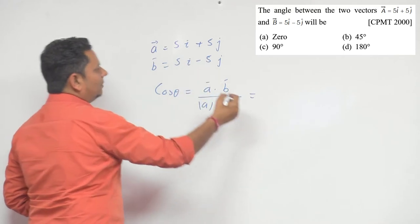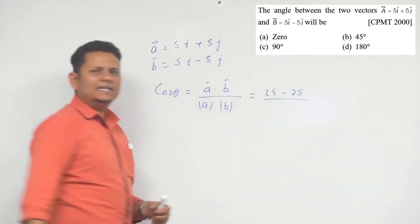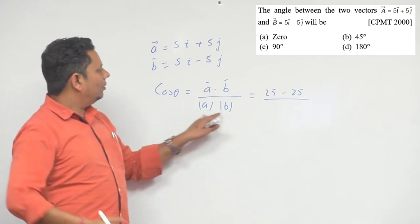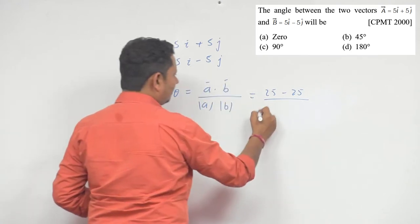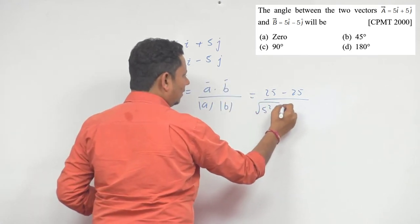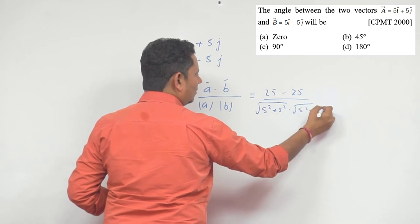Calculating the dot product: i times i and j times j, so this will be 25 minus 25. Clearly the numerator is 0. We don't really need to calculate the denominator, but as a teacher I should complete the work. So this will be square root of 5 squared plus 5 squared multiplied by square root of 5 squared plus 5 squared.